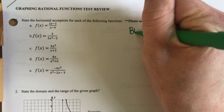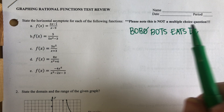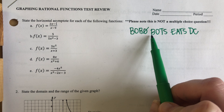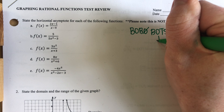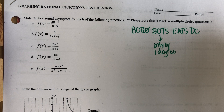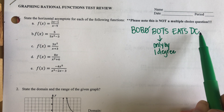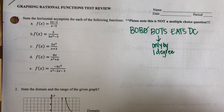The mnemonic device that we taught you in order to remember this is BoboBots Eats DC. If it's bigger on bottom, Y equals zero. If it's bigger on top, it's going to be a slant, but this is only by one degree. If it's more than one degree, we're just simply going to state that there is no horizontal asymptote. And then the last part — Eats DC — exponents are the same, divide coefficients.